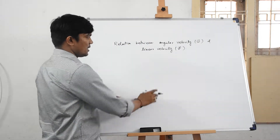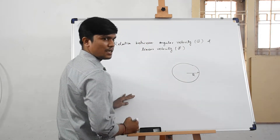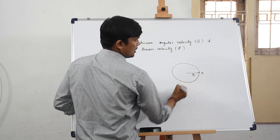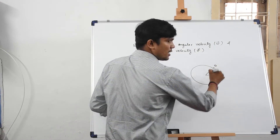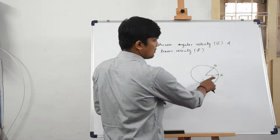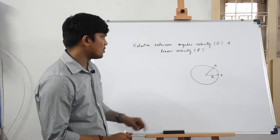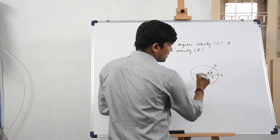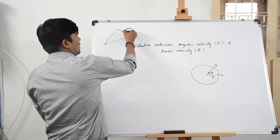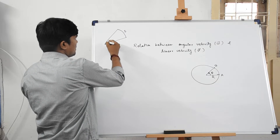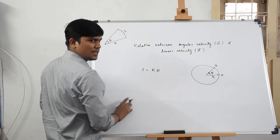Now consider a particle moving in circular motion where the radius of the circle is r. This is the initial position of the particle — point A — and the final position: in a very small time interval dt the particle reaches to point B. The small angle travelled by the particle is theta. We have the relation: arc length s equals r theta.